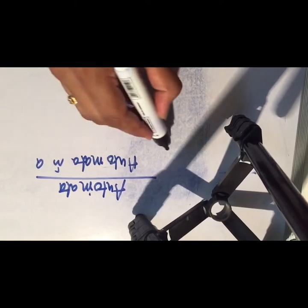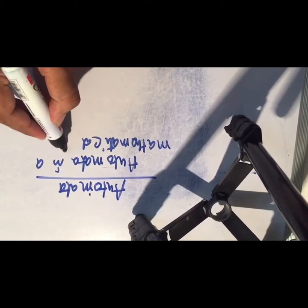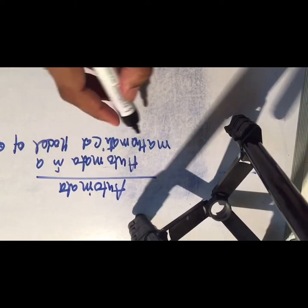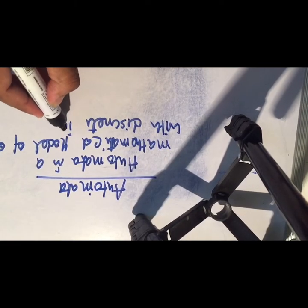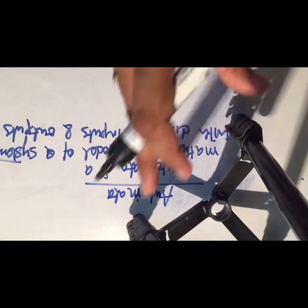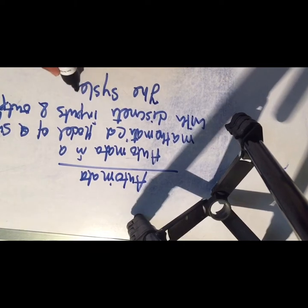First of all, what is automata? Automata is a mathematical model of a system with discrete inputs and outputs. The word automata comes from 'automatic'.